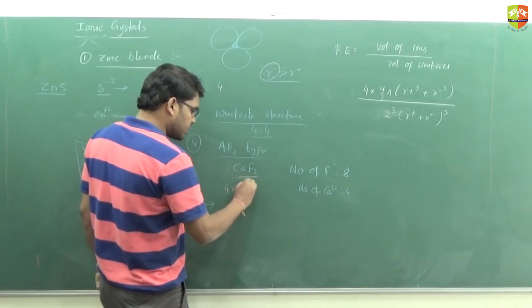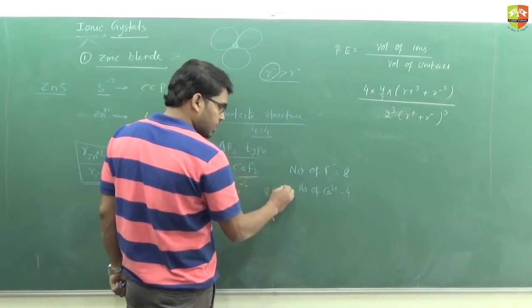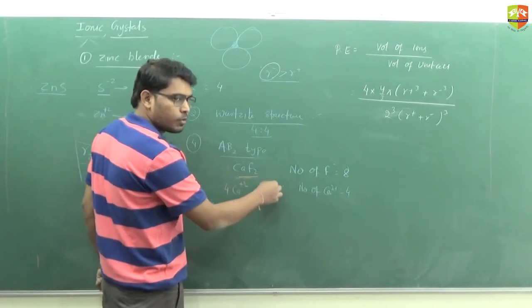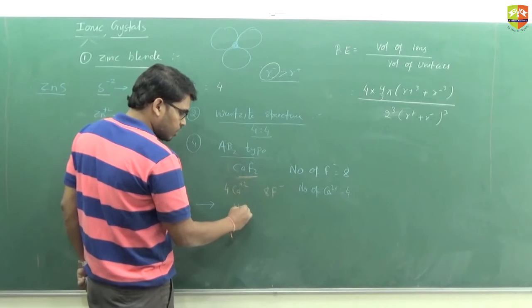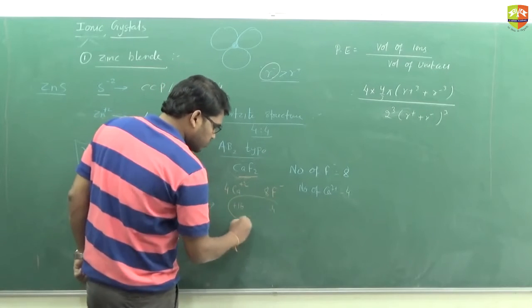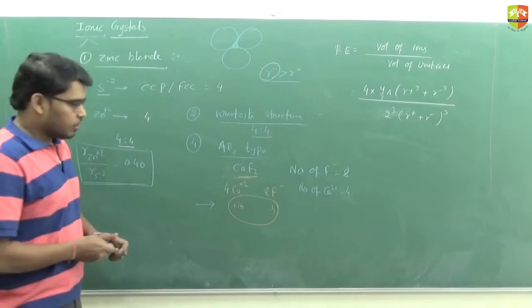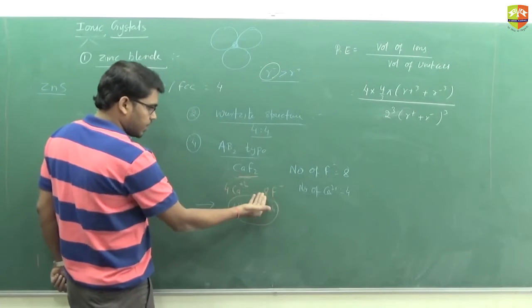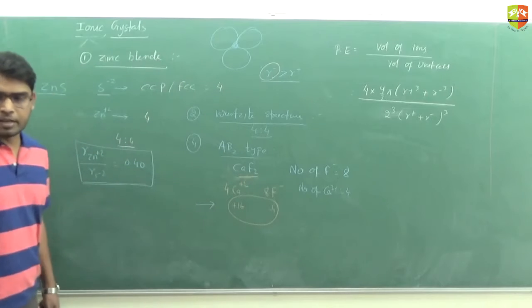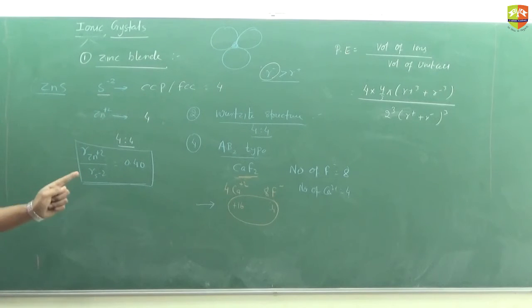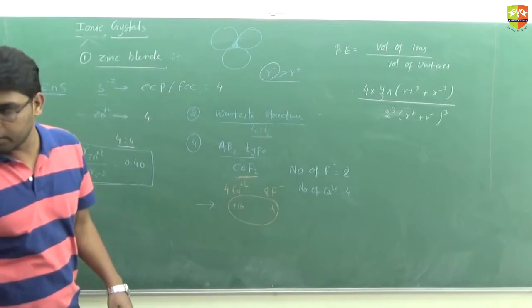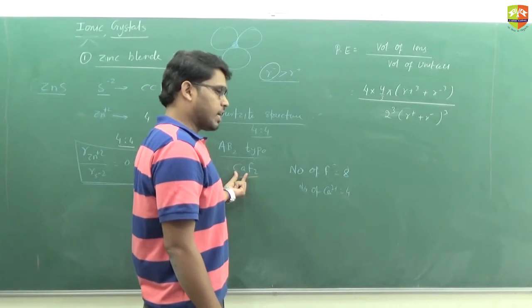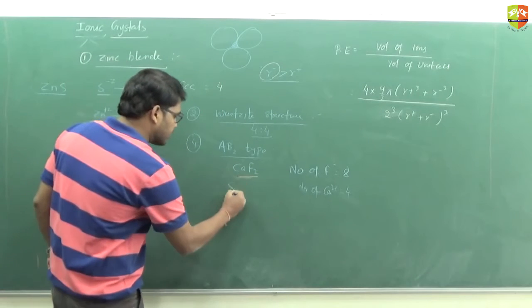So you don't get confused: 8 Ca²⁺ and 4 F⁻ is not possible, because 8 Ca²⁺ gives charge +16 and 4 F⁻ gives −4, which is not neutral. The correct arrangement is 8 F⁻ and 4 Ca²⁺, which is neutral. So when you get a question with options 4 or 8, think about charge neutrality. Hence the arrangement is 8:4 - each Ca²⁺ is surrounded by 8 F⁻, so the arrangement is 8:4.